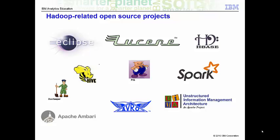Yarn is a large-scale operating system for big data applications. MapReduce is a software framework for easily writing applications which processes vast amounts of data.